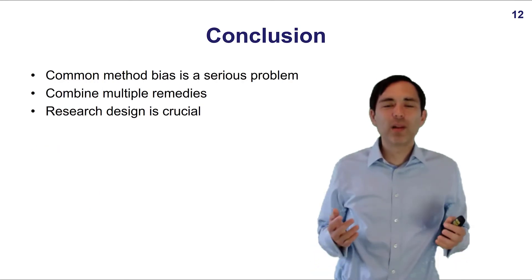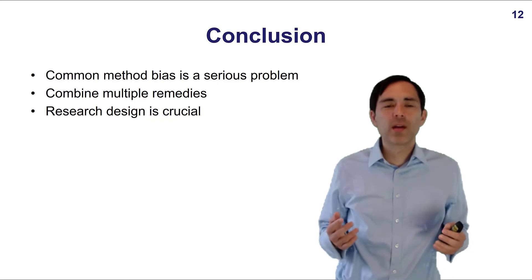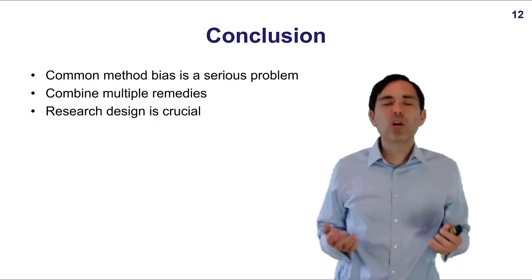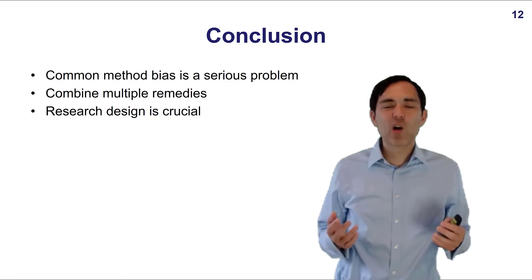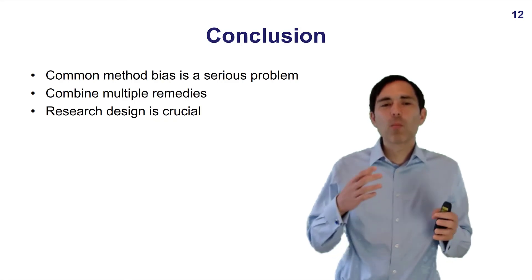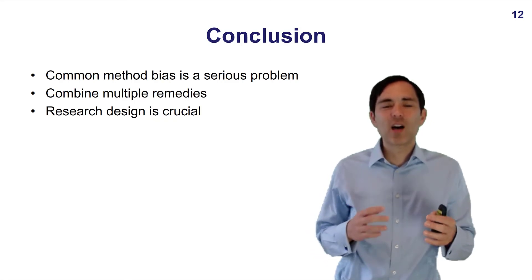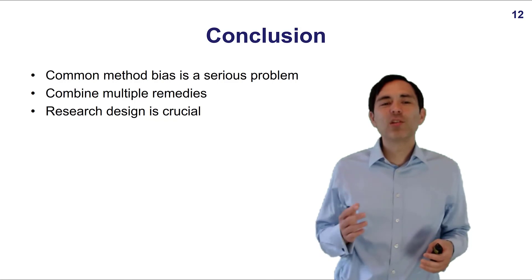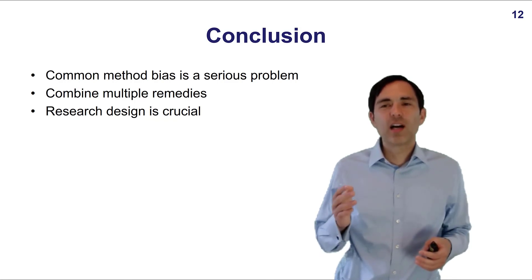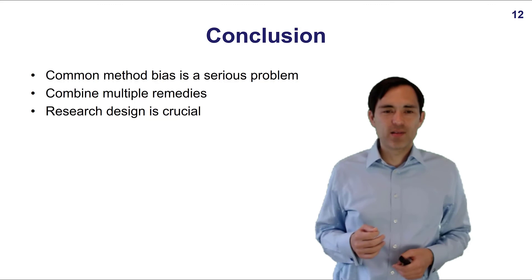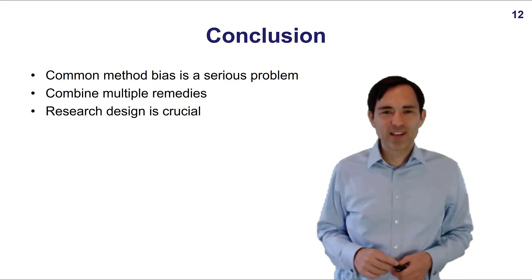In this video I explained what Common Method Bias is, what its sources are, and I hope you understand that it is a serious problem for survey research projects. It's very important to find various ways to counter it — researchers should combine several countermeasures. Extremely important is to carefully design a research project already at the design stage to prevent or at least reduce Common Method Bias. Good luck with your research project. Bye-bye.